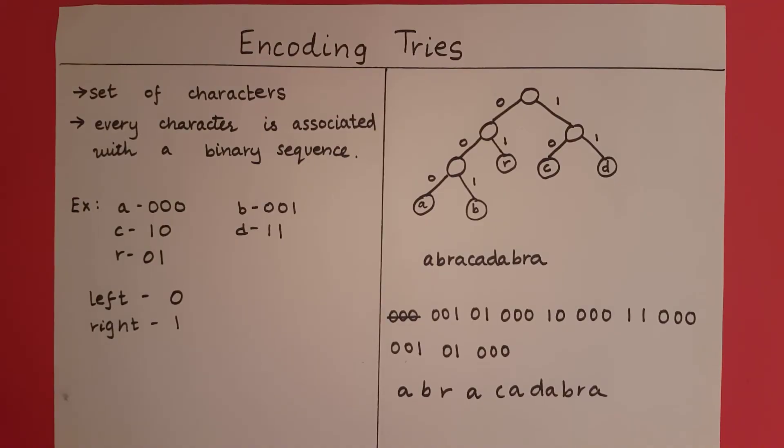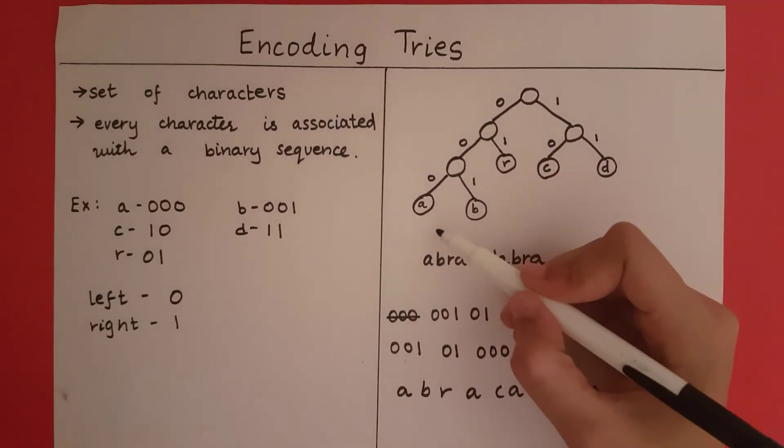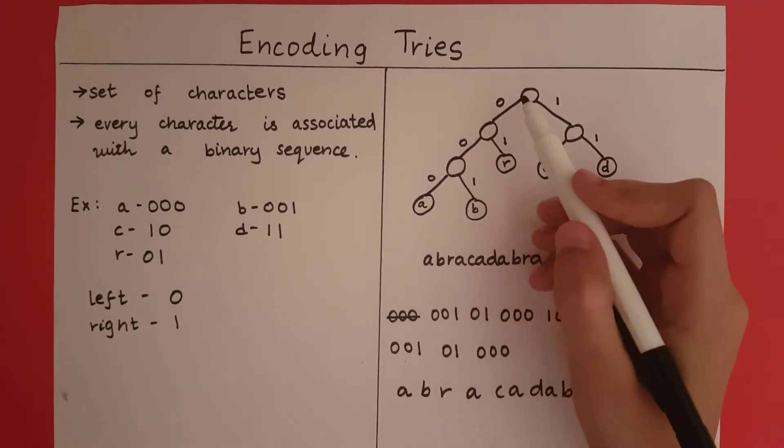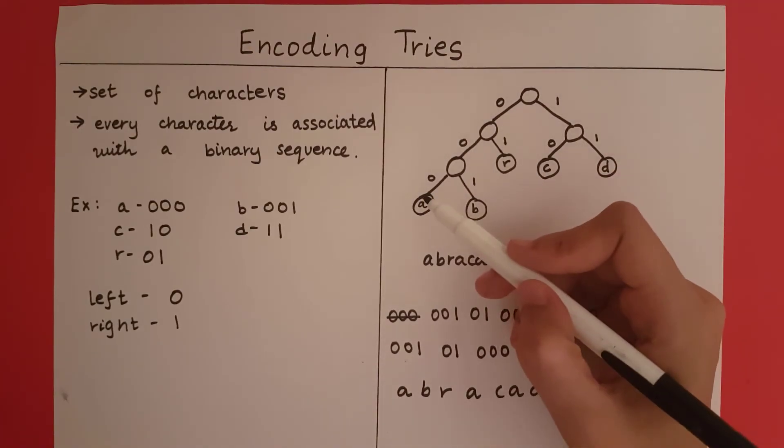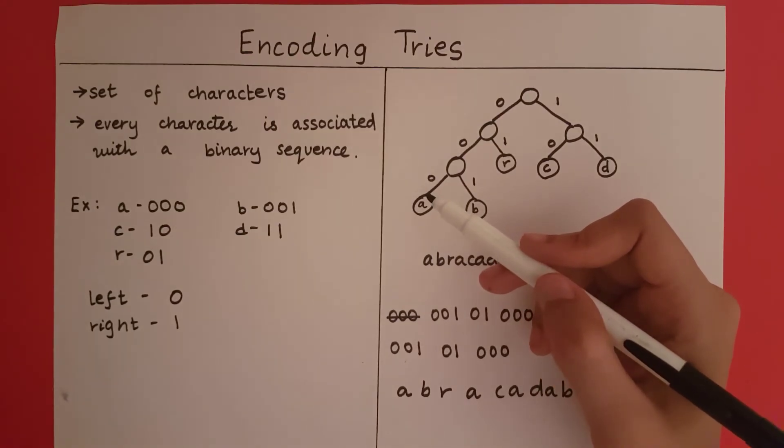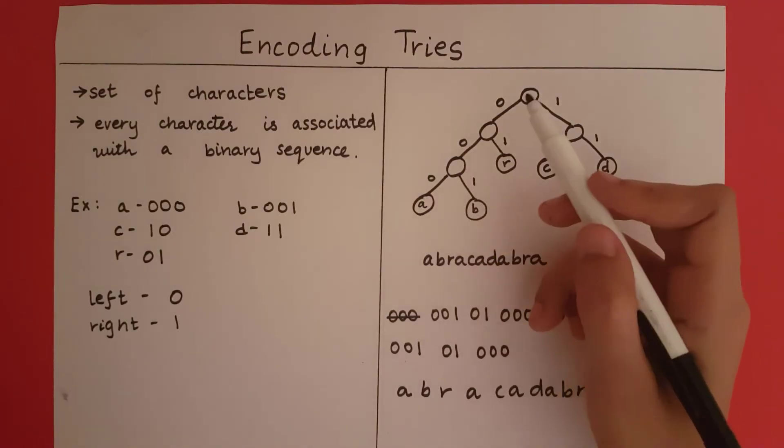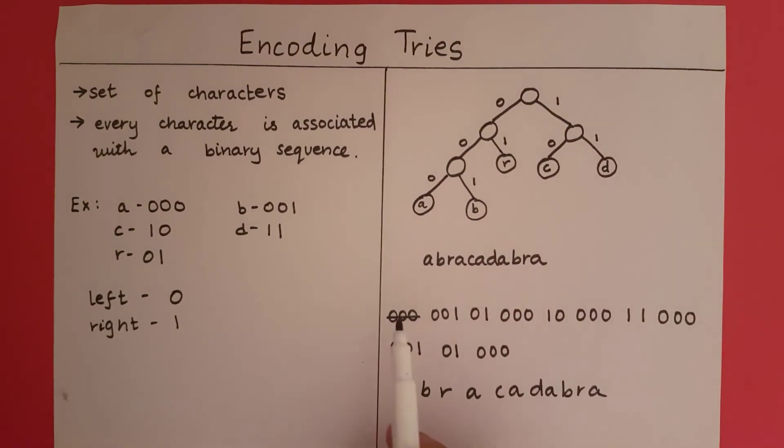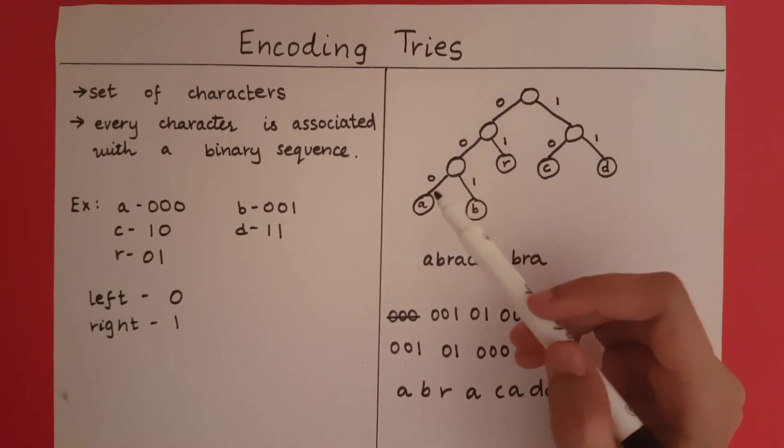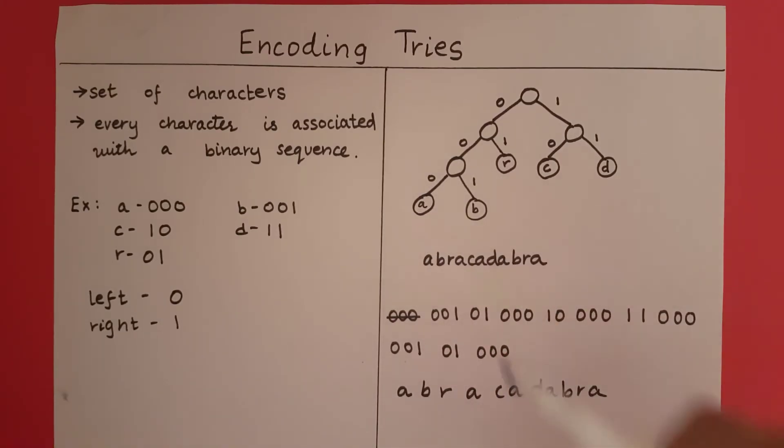Now if suppose I had a character with a binary sequence that shares the prefix of another character. Let's say I had a character maybe S somewhere here which is 0001. Now that is going to share the prefix of A, that is 000. Now when we traverse 000, we don't know whether to go to S or stop at A. That is, after we have reached a node with a character, there cannot be any following nodes to it, because then when we are parsing these numbers, we don't know whether to stop at that character or go on to the next one.